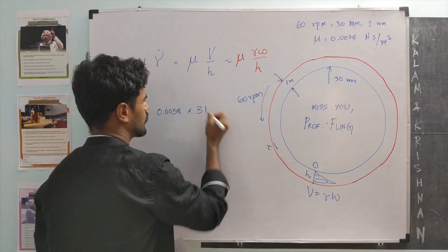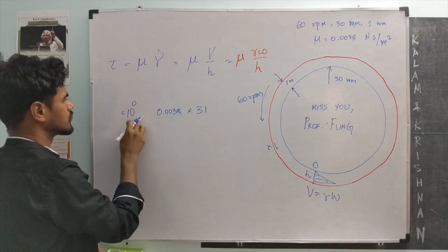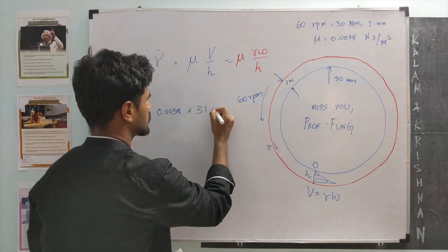I am going to write all the powers of 10 at the beginning. So, 10 power 0, it is 1. We start with that. Minus 3 for mm. That times the omega. So, omega is 60 revolutions per minute.